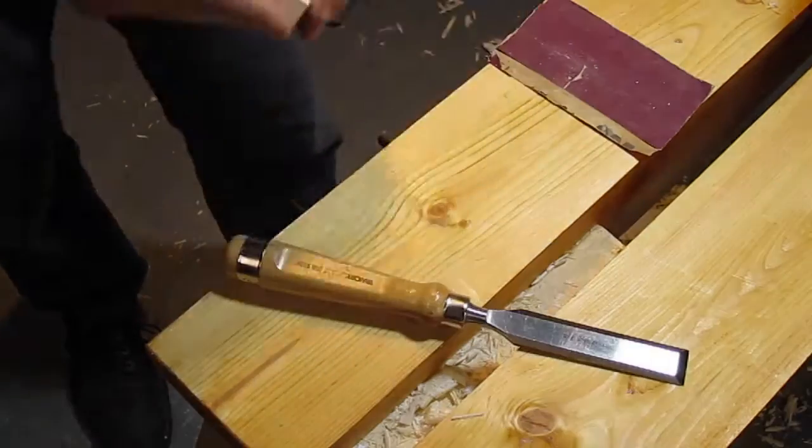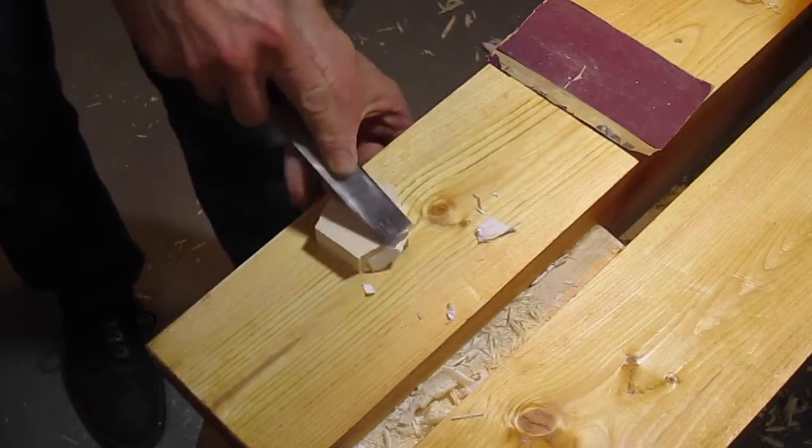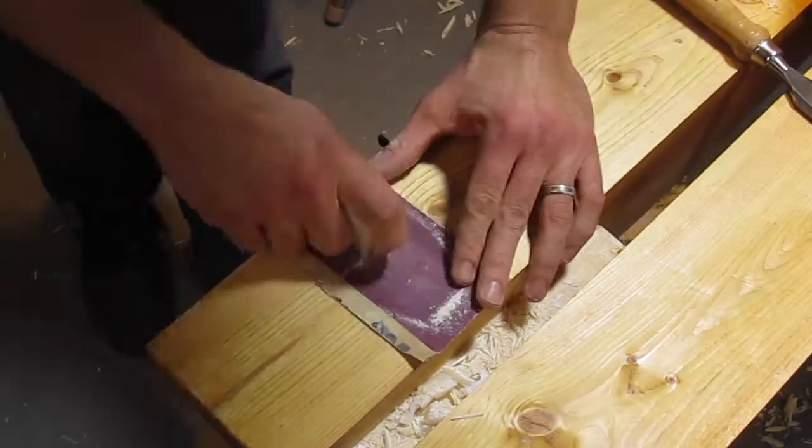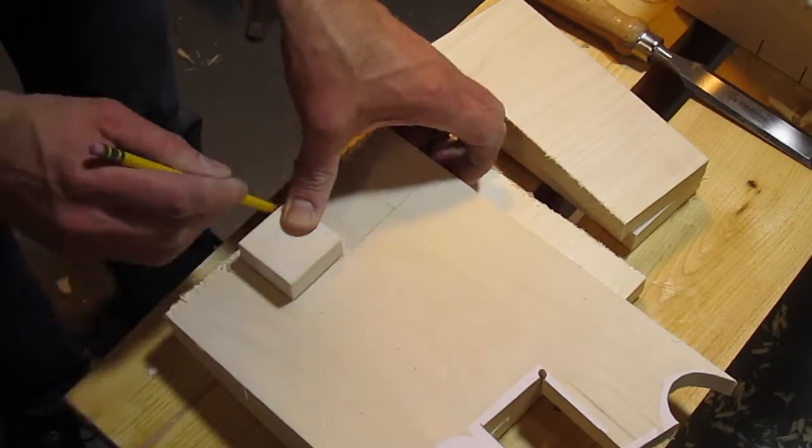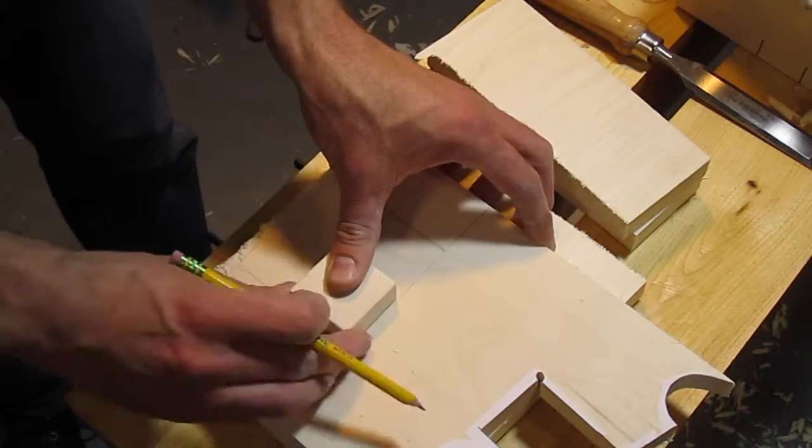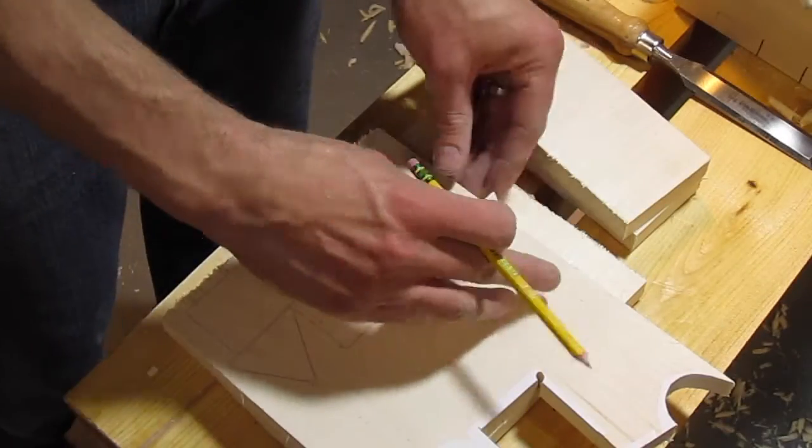I cut out one of each of the blocks using the templates, making sure to cut on the inside of the lines. Then I scraped and sanded off the template and glue and refined the shape of each block. I traced these pieces, trying to fit them as closely together as possible to avoid wasting wood. I could have glued on templates for all the pieces, but I wanted to avoid the extra step of scraping and sanding off the template.